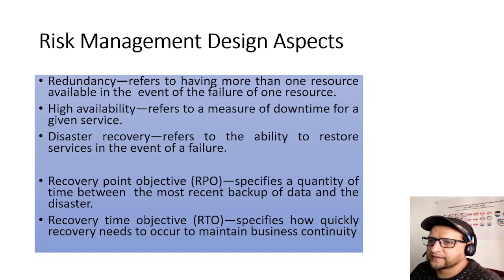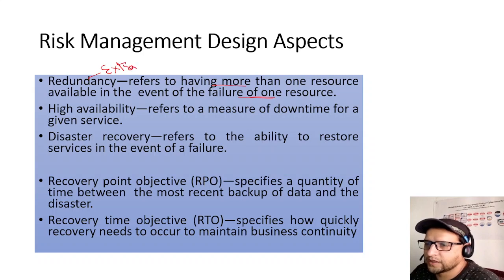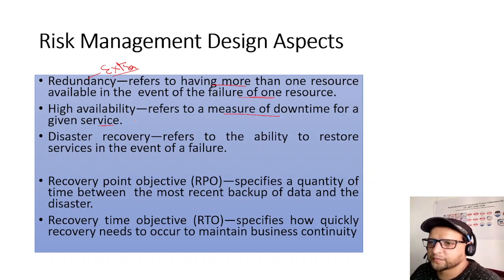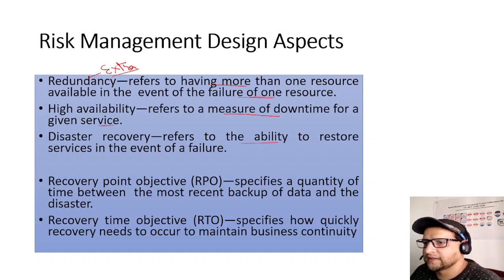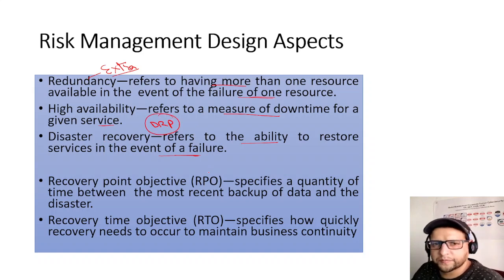Risk management and design aspects in the cloud: Redundancy refers to having more than one resource available in the event of failure — for example, having two servers instead of one. High availability refers to minimizing downtime for a given service. Disaster recovery refers to the ability to restore services in the event of failure, governed by a disaster recovery plan, team, and policies.